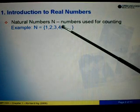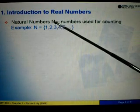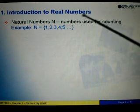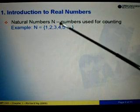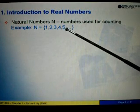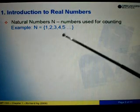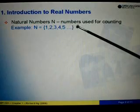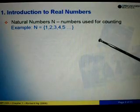we have natural numbers, denoted by the symbol N. These are the numbers used for counting. For example, 1, 2, 3, 4, 5. Please note that 0 is not included in the natural numbers. Because for counting, we will start with 1, 2, 3, 4, 5, and so on.